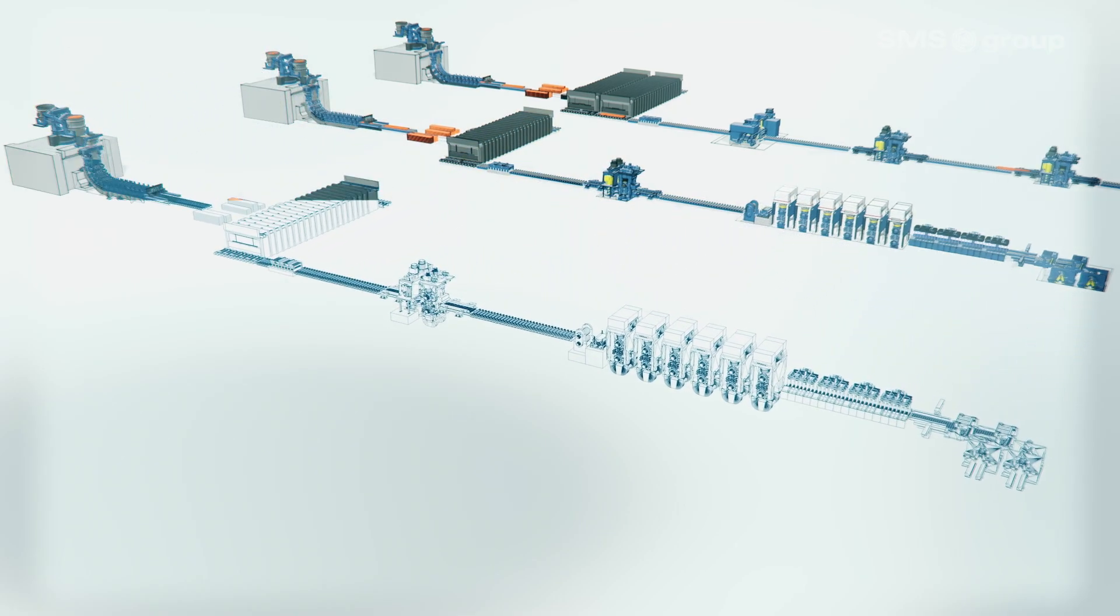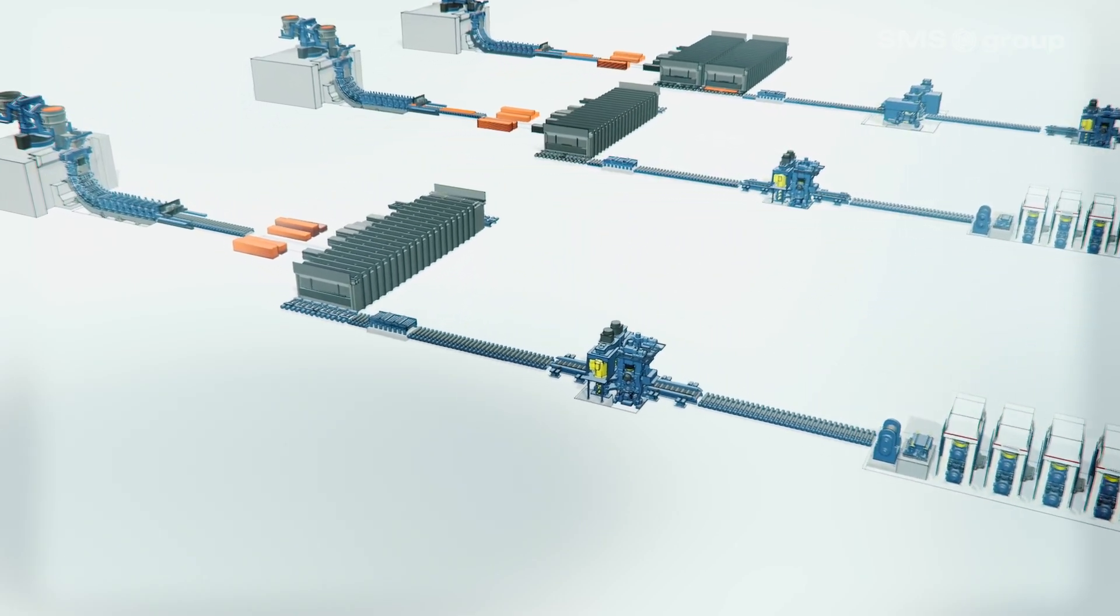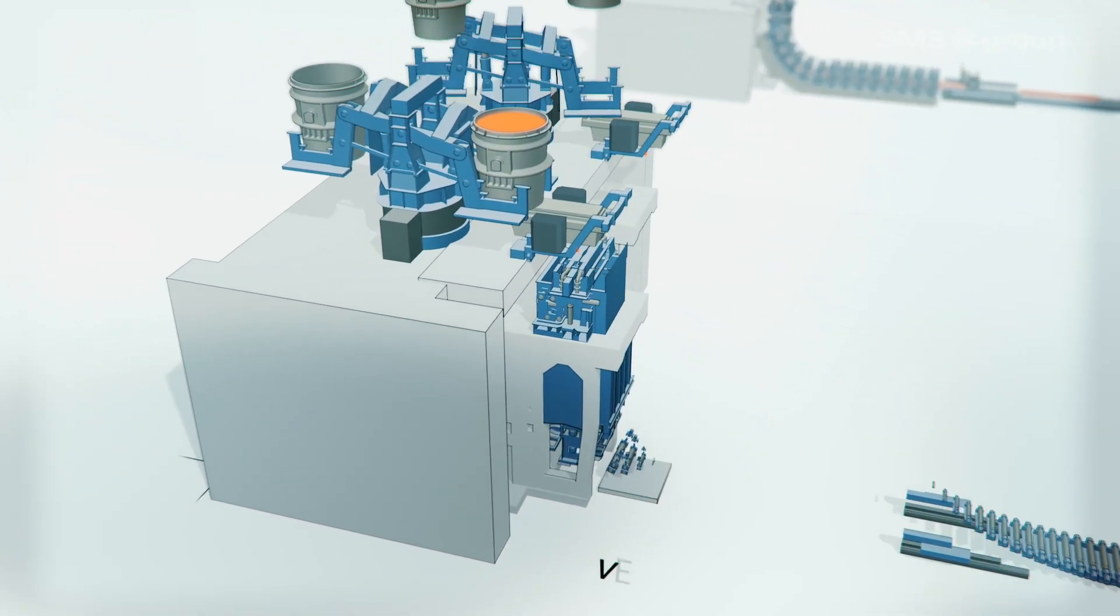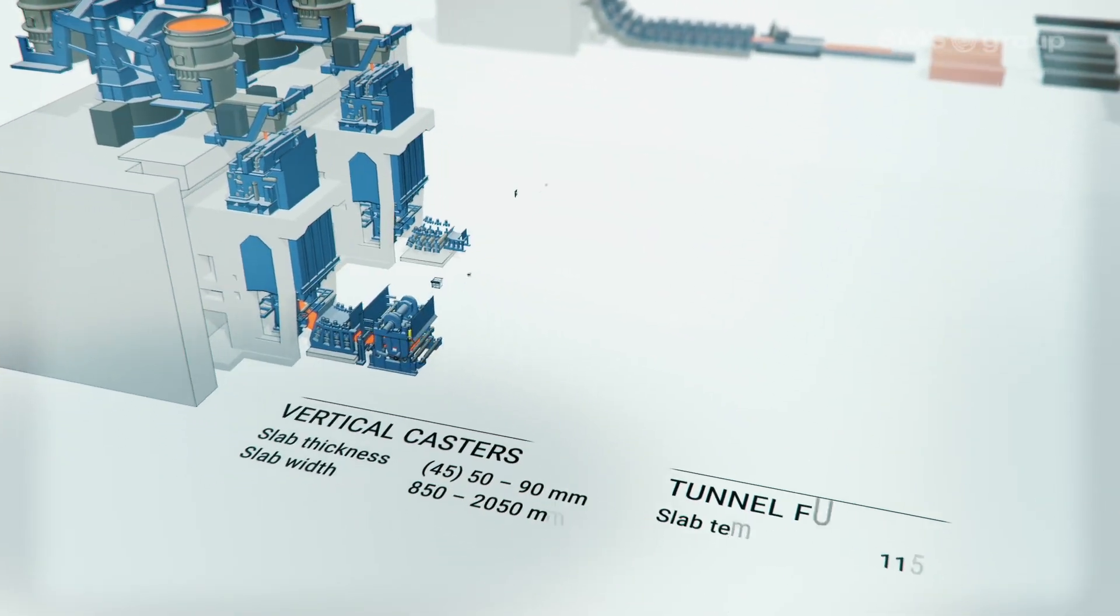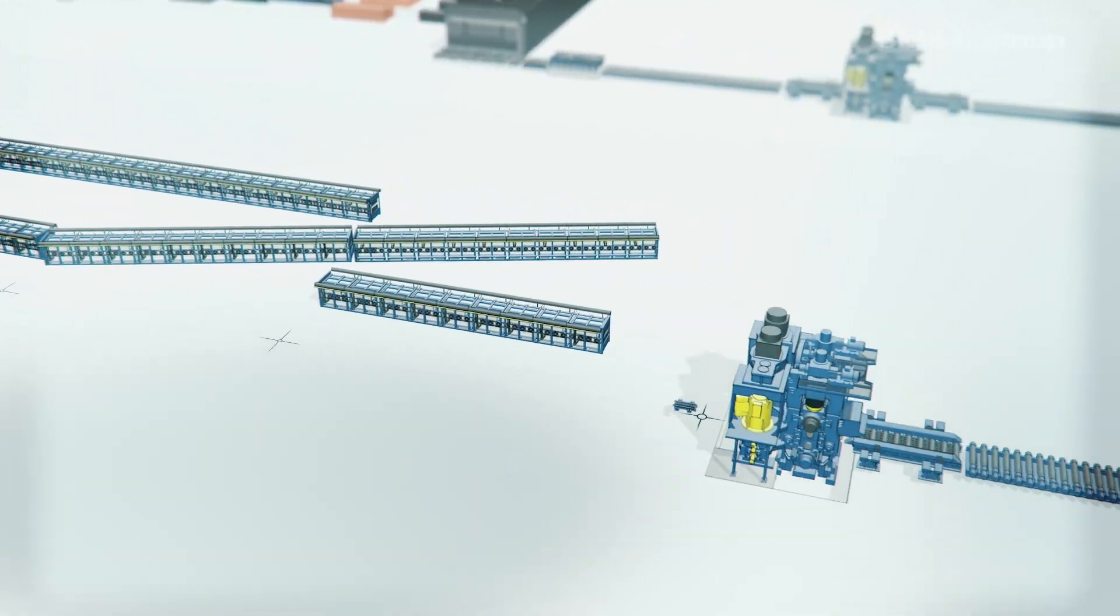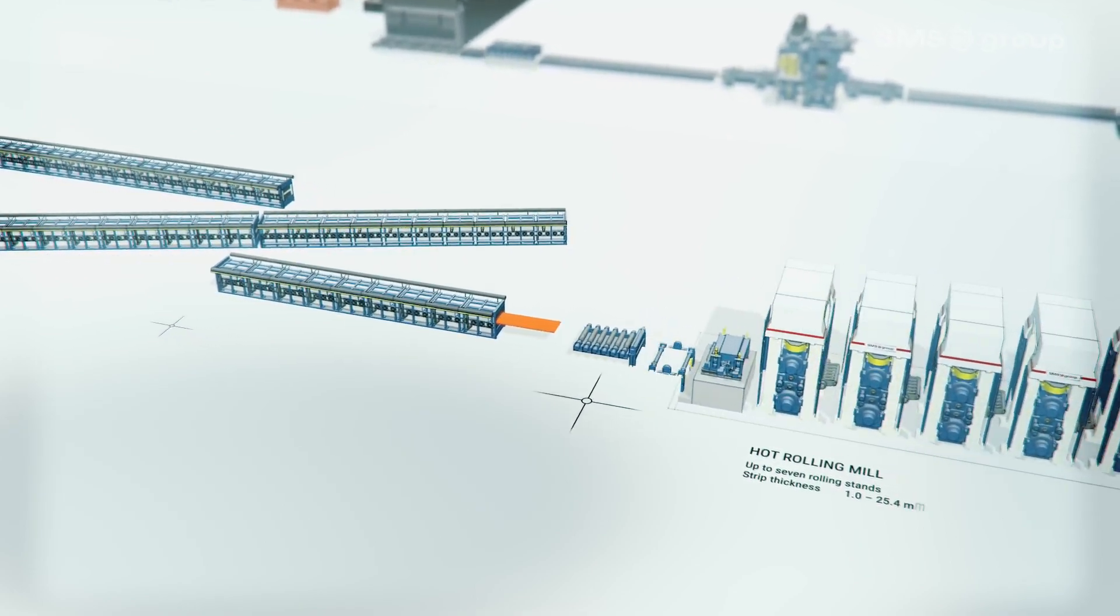The layout of a CSP plant includes one or more vertical casting strands, a tunnel furnace, and a hot rolling mill.